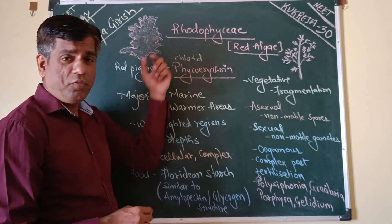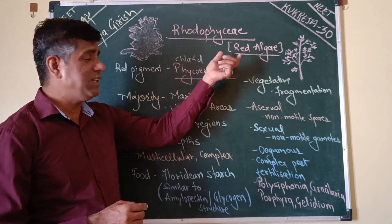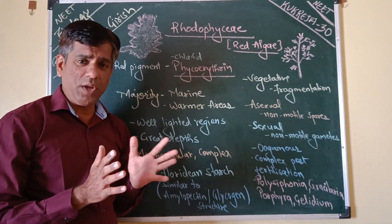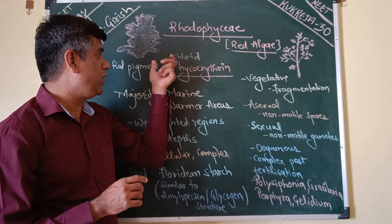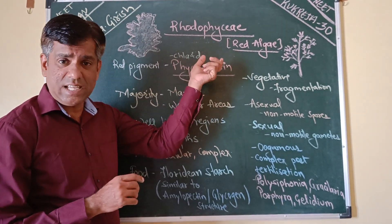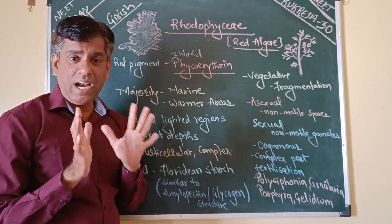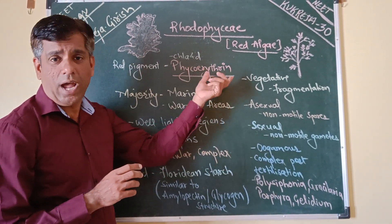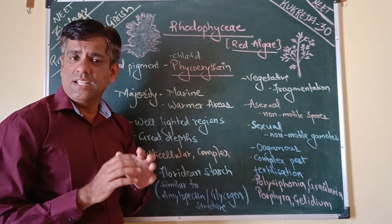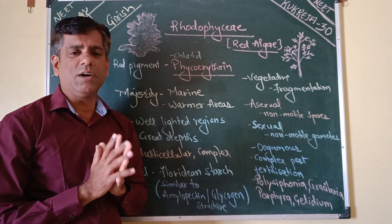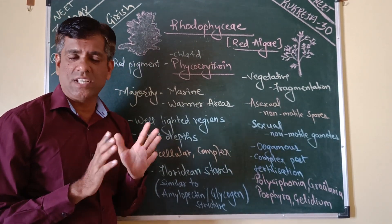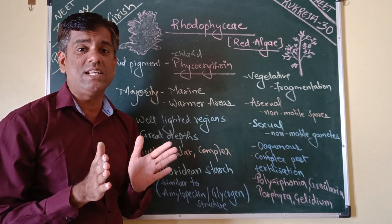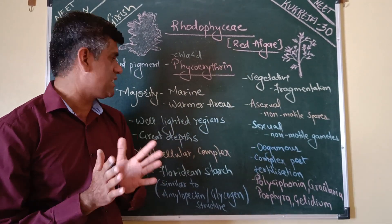The Rhodophyceae, or the Red Algae, have major pigments of Chlorophyll A and D along with the red coloured pigment Phycoerythrin. The cell wall comprises of cellulose, pectin and polysulphate esters.